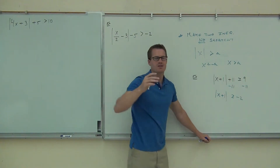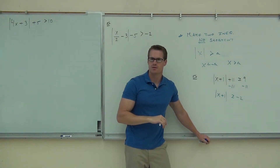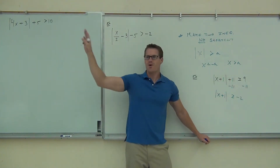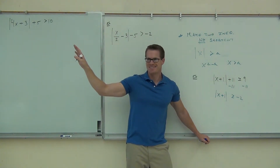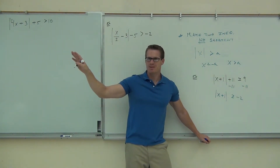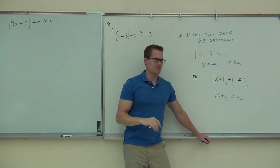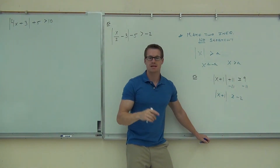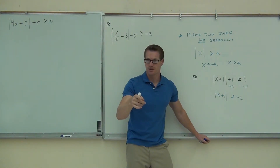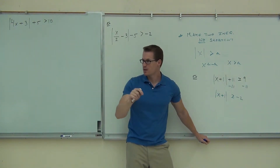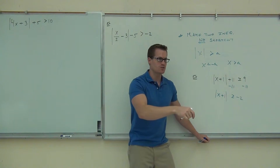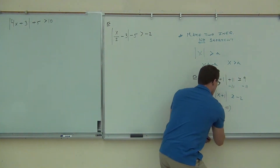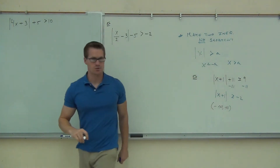Try any number — give me a crazy number. How about negative 53? Add one to negative 53, what do you get? Negative 52. Take the absolute value of negative 52, what do you get? 52. Do you see how when you take the absolute value it becomes positive? Is that greater than negative 2? All the time, no matter what you plug in. And that's what this says — no matter what I plug in, that's always true.